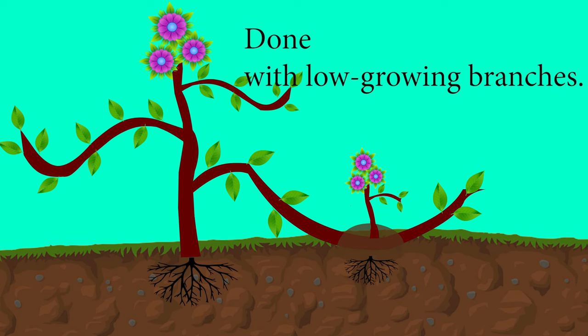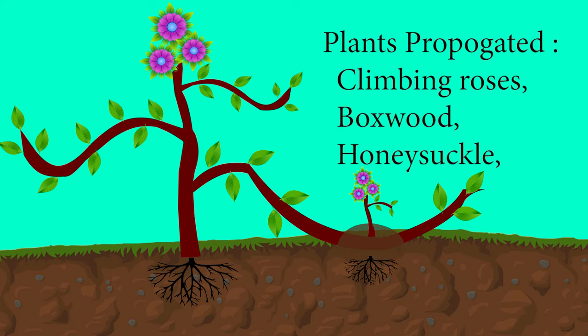Simple layering can be done on most plants with low growing branches. Plants propagated by simple layering include climbing roses, boxwood, honeysuckle and many more.